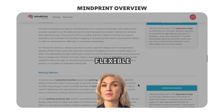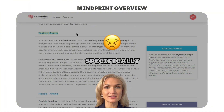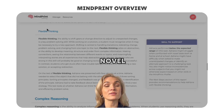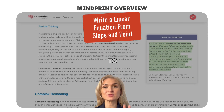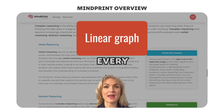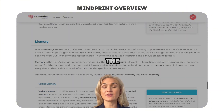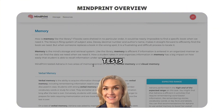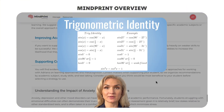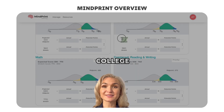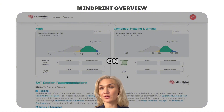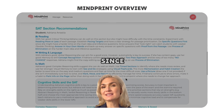Students with a low flexible thinking score also specifically struggle with novel question types, which is why it is important to introduce them to every possible flavor — every possible variation of a question that tests them on the same concept. For example, trigonometric identity. It is unavoidable that they will see something unusual on their test, because College Board is really good at keeping students on their toes.